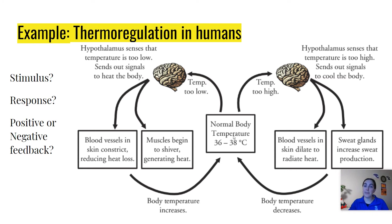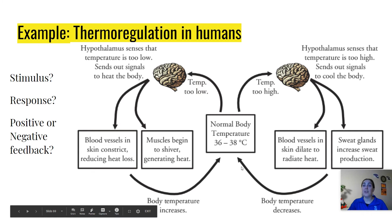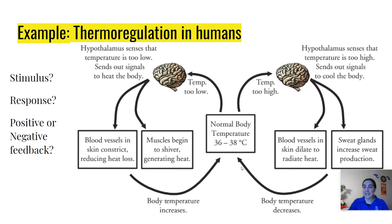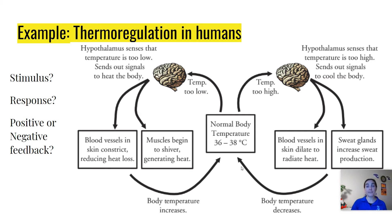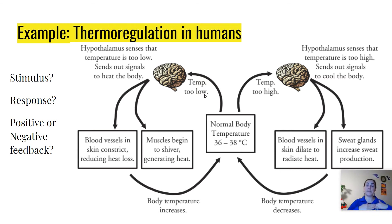On the other side, the stimulus is that your temperature is too high. The hypothalamus senses it, sends out signals, and you start sweating and your blood vessels dilate, which decreases your body temperature. Again, this is negative feedback — because your body temperature was too high, the response decreases that stimulus and brings your body temperature back to where it should be. In either case, both sides are negative feedback. Negative feedback just means getting rid of the stimulus — whether temperature is too low or too high, negative feedback brings it back to normal.